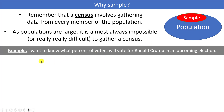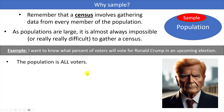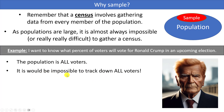An example we're going to work with is: let's say we want to know what percent of voters are going to vote for Ronald Crump in an upcoming election. He's running for President of the United States. We're like a polling organization and we want to know what percent of all the voters who are going to turn out for this upcoming election are going to vote for Ronald Crump — and we want to estimate that before the election actually happens.